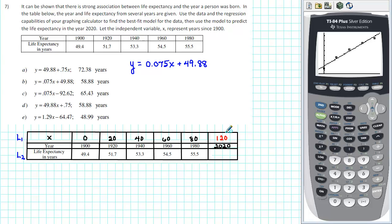So we'll substitute 120 for X in our model. We get 0.075 times 120 plus 49.88. We then use our calculator to evaluate. We get 58.88. So the model Y is equal to 0.075X plus 49.88 predicts that the life expectancy in the year 2020 will be about 58.88 years. The correct answer is B.